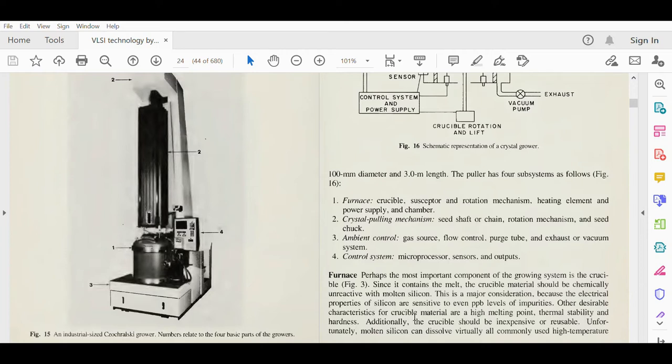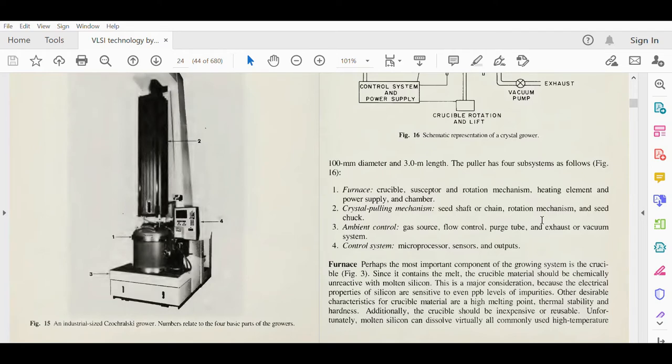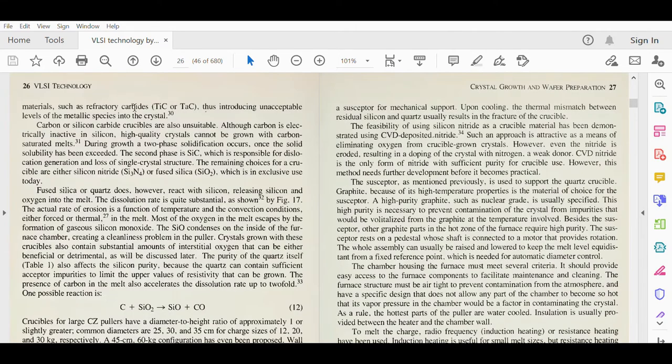Unfortunately, molten silicon can dissolve virtually all commonly used high temperature materials such as refractory carbides TiC or TaC, thus introducing unacceptable levels of metallic species into the crystal. So we cannot use TiC and TaC.